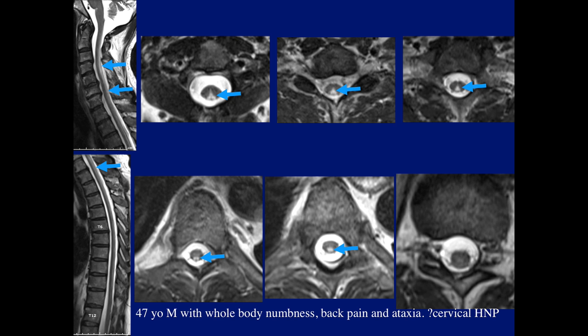Here's another case that came in with a questioned herniated disc. The patient had whole body numbness, back pain, and ataxia. Again, we see — not as dramatically as in the last case — but abnormal signal in the region of the posterior columns involving the gracile fasciculi.